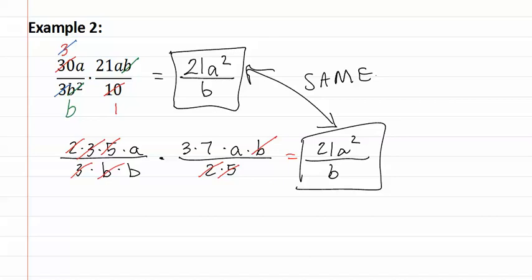When reducing fractions, either before or after prime factorization, make sure to draw clear lines and be able to see which factors are left. Remember that repeated multiplication is done with exponents, so you can always expand out anything with an exponent, such as b squared to be b times b.